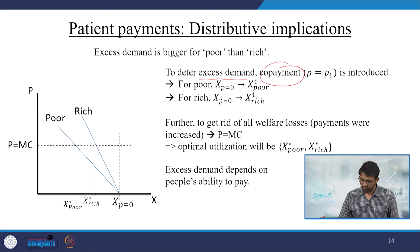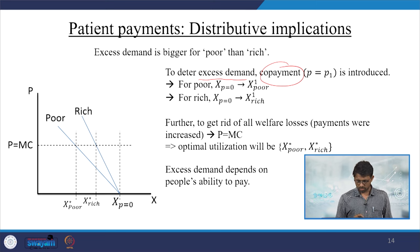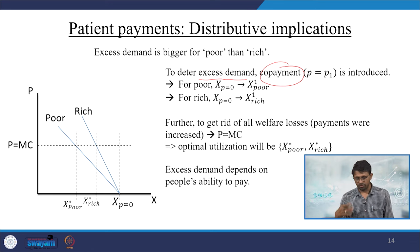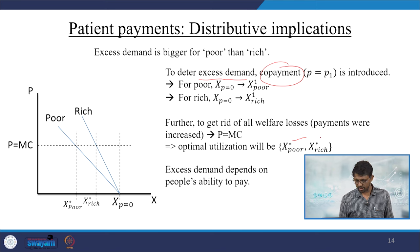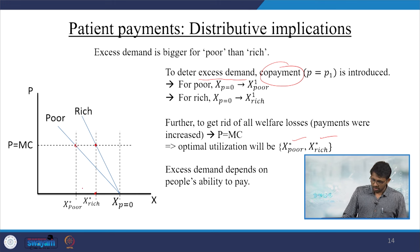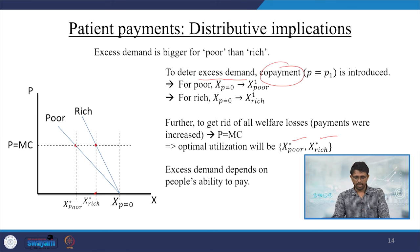To get rid of all welfare losses as per the market-based evaluation, the optimal point is x-star for the poor and x-star for the rich. The excess demand depends on people's ability to pay.